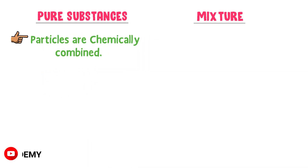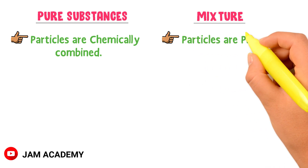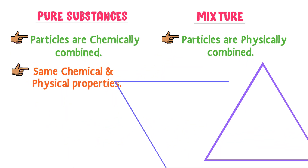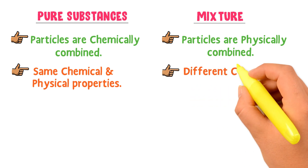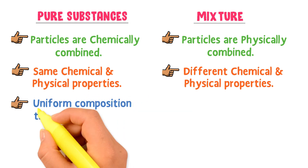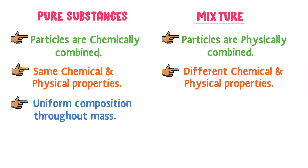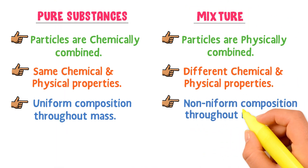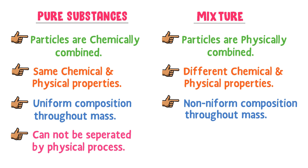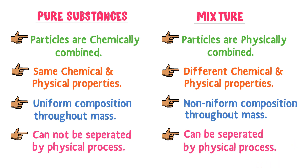The key differences between pure substances and mixtures: In pure substances, particles are chemically combined, while in mixtures, particles are physically combined. All particles in a pure substance have the same chemical and physical properties, while in mixtures, different particles have different properties. Pure substances have uniform composition throughout their mass, while mixtures usually have non-uniform composition. Pure substances cannot be separated by any physical process, while mixtures can be separated by physical processes like filtration.